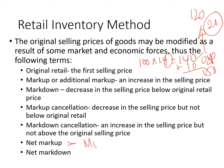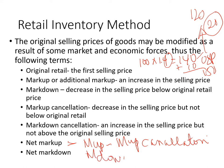Net markup is markup minus markup cancellation. Net markdown is markdown minus markdown cancellation. In problems, sometimes only the net markup or net markdown is given directly, which means the same thing.